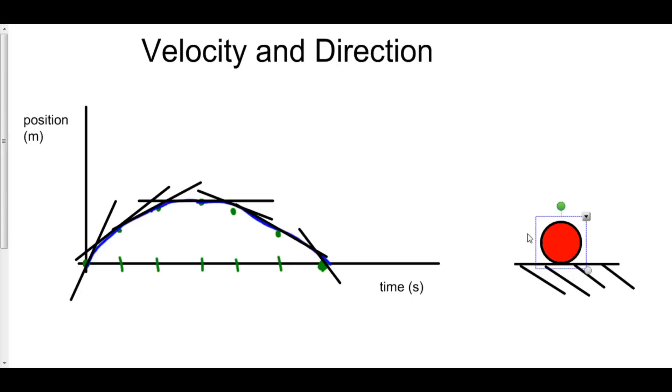In order for the ball to reach its maximum height, it had to go in the positive direction and then go in the negative direction. It couldn't go any more positive. It had to change directions. At that moment when it changed directions, what was the velocity? It was zero.